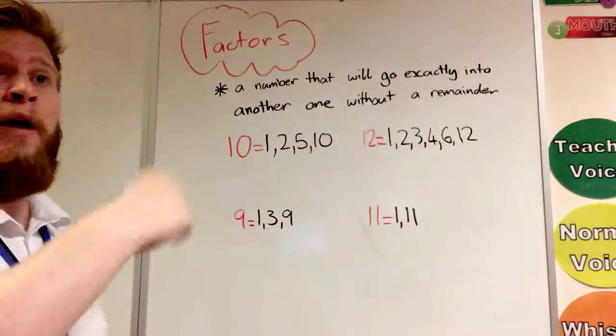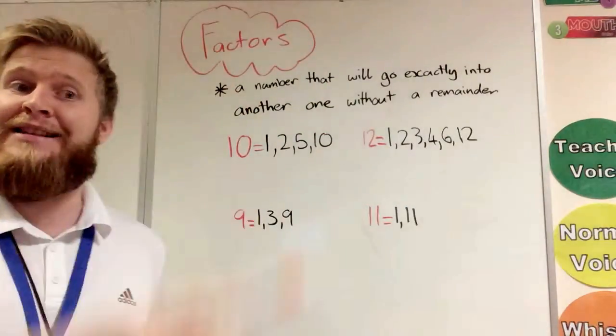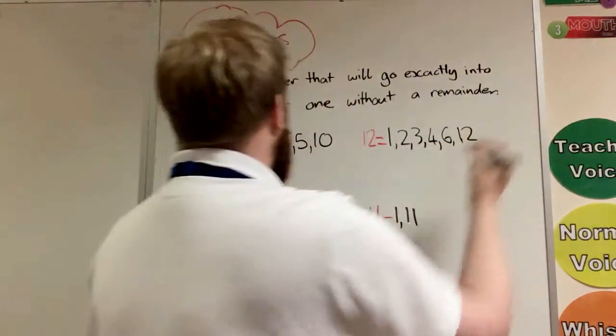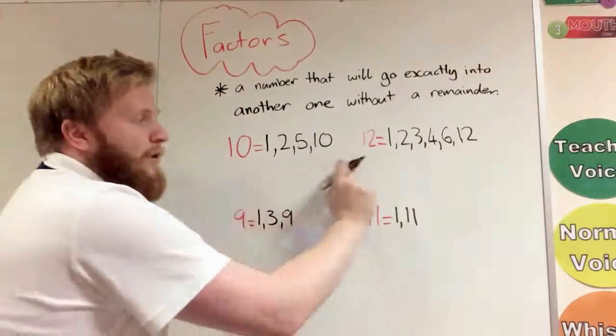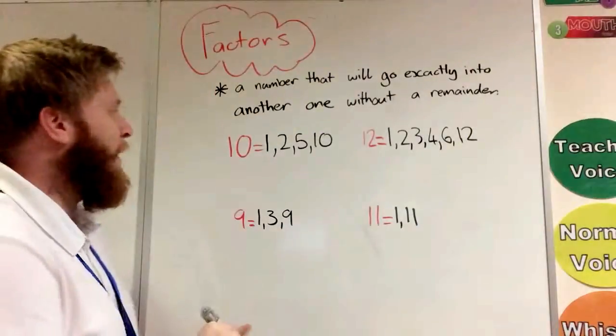That means if we count on in that multiplication table, it will get exactly that number. I'll show you exactly what that means. So we've got 10 here and I've wrote down the factors of 10. We've got 1, 2, 5, and 10.